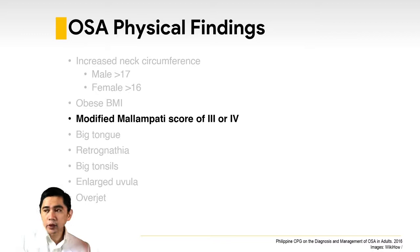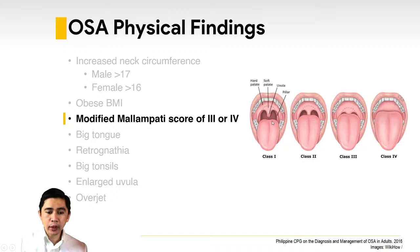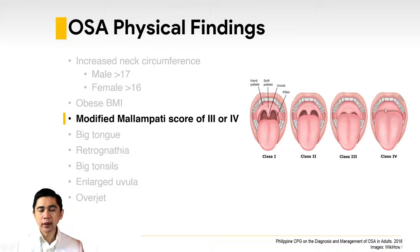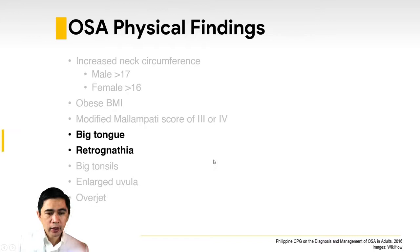A modified Mallampati score of 3 or 4 is also a physical finding for OSA. Mallampati scoring is obtained by having the patient open their mouth and stick out their tongue. Class 1: you can see all structures — hard palate, soft palate, uvula, and pillars. Class 2: you cannot see the pillars. Class 3: you can only see the soft palate and hard palate, not the uvula. Class 4: you can only see the hard palate. Class 3 or 4 indicates high risk for OSA.